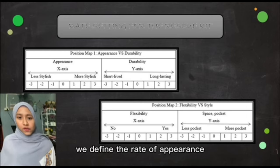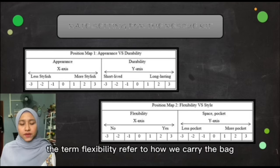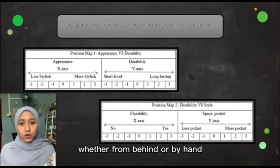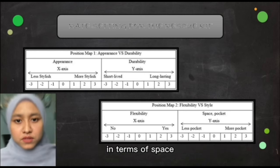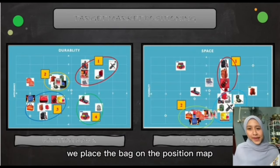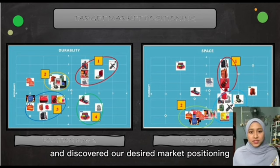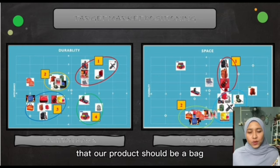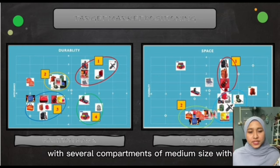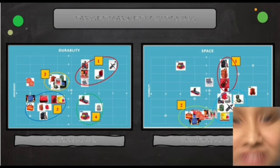We defined the rate of appearance and durability in material terms for this project. The term flexibility refers to how we carry the bag, whether from behind or by hand. We also considered how many compartments the respondents require in terms of space. We placed the bag on the position map based on the rating and discovered our desired market positioning. We can conclude that our product should be a medium-sized bag with several compartments and a strong material.